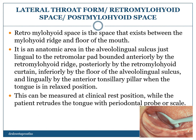Lateral throat form, also called the retromylohyoid space or postmylohyoid space. Can you see the picture? It is the space that exists between the mylohyoid ridge and the floor of the mouth. Its boundaries are very important and often asked during the exam. It is an anatomic area in the alveololingual sulcus, just lingual to the retromolar pad, bounded anteriorly by the retromylohyoid ridge, posteriorly by the retromylohyoid curtain, inferiorly by the floor of the alveololingual sulcus, and lingually by the anterior tonsillar pillar when the tongue is in the relaxed position.